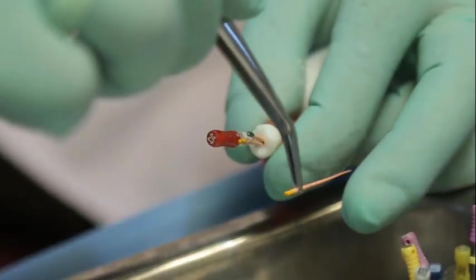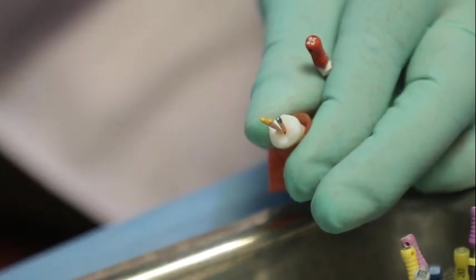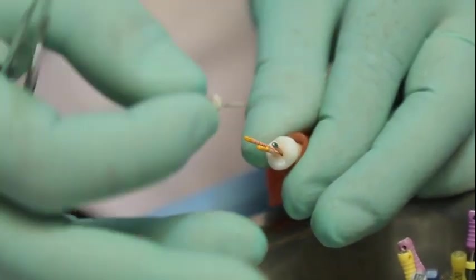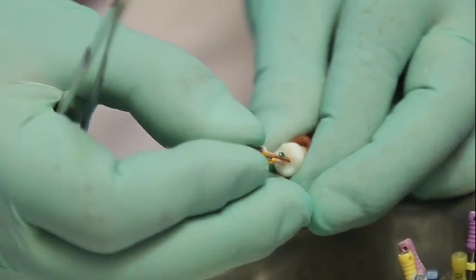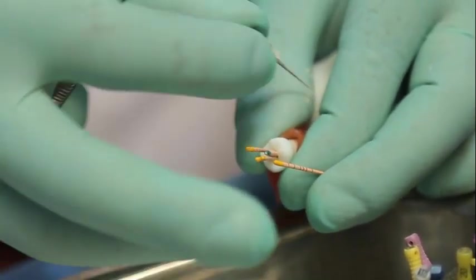Make sure that your spreader doesn't go below the middle third. If you are not doing a little bit of lateral condensation, sometimes the master cone will be pulled out when you are inserting the ultrasonic tip. So a little bit of lateral condensation is preferred before inserting the ultrasonic tip.